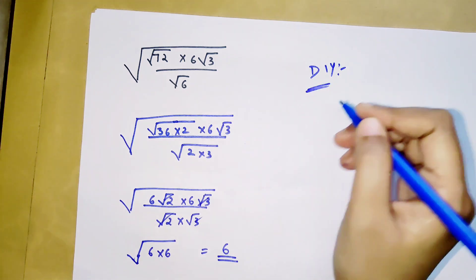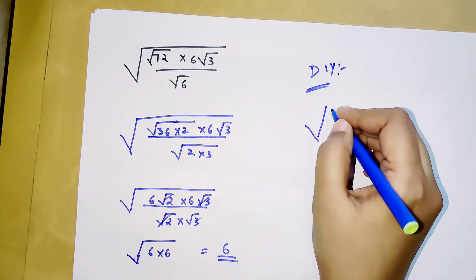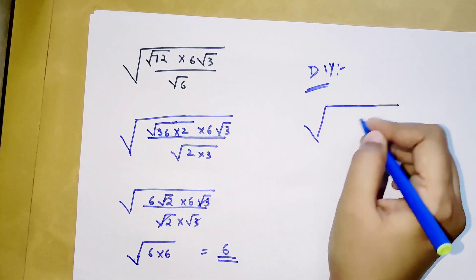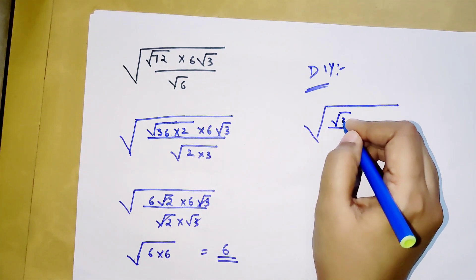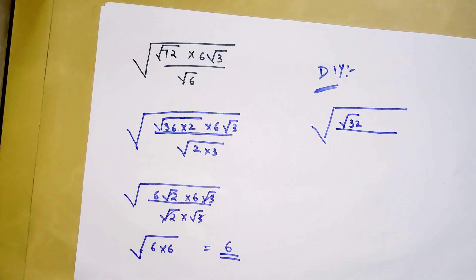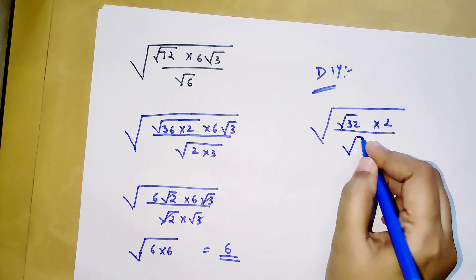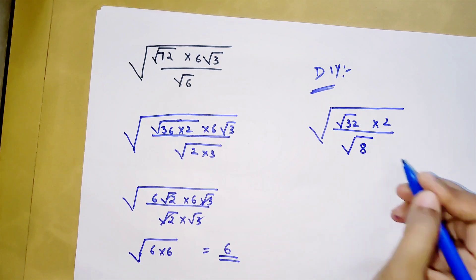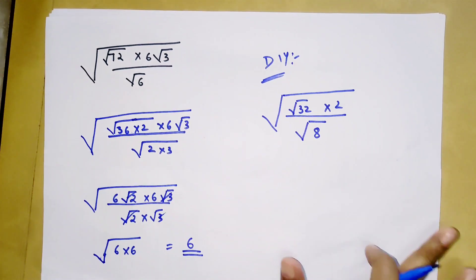Time for your DIY! The question has a big square root containing a fraction: in the numerator you have 32 × 2, and in the denominator you have √8. Let me know your answers in the comment section. That is it for now — I will see you in the next video.